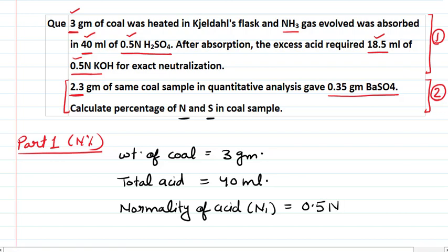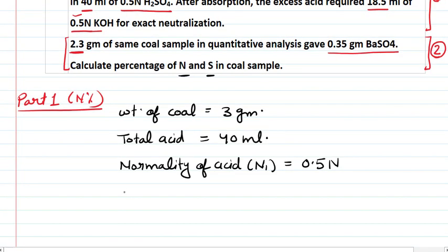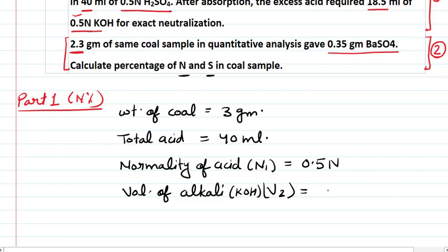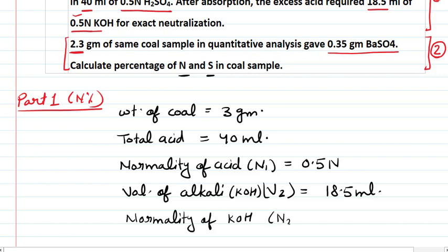Next, we are given 18.5 mL of 0.5N KOH. That means the volume of alkali (NaOH or KOH) — whichever is given in the question — is V2 = 18.5 mL. And the normality of NaOH or KOH, that is the alkali, is N2 = 0.5N.